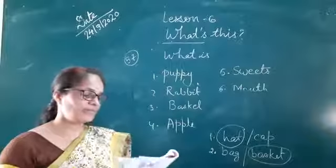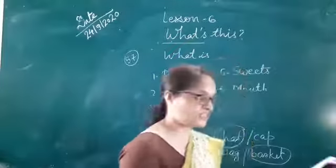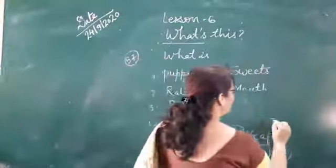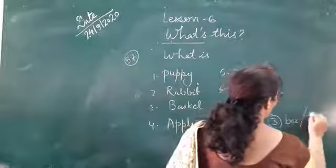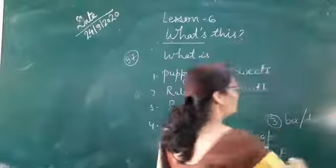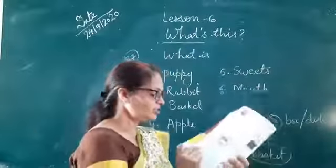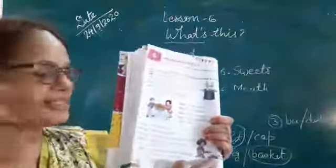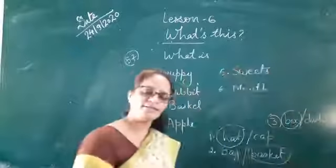And last, three. There are sweets in the box or dish. Number three, there are sweets in the box or dish. Dish matlab plate. Box mein kis mein bataye? Sweets to dekh hi rahe hain. Box. So you will circle the box and you will do three sentences.